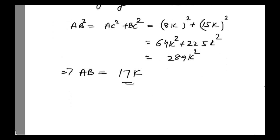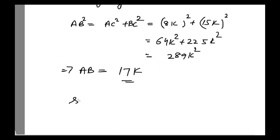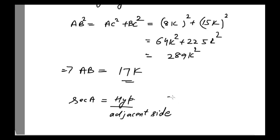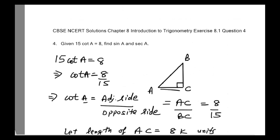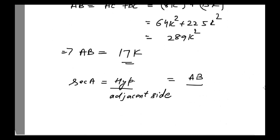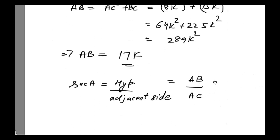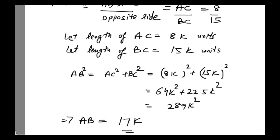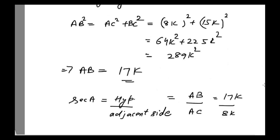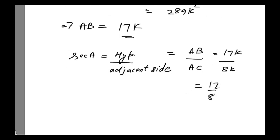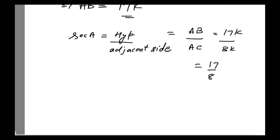Now we can find sine A and secant A. Secant A is equal to hypotenuse divided by adjacent side. The hypotenuse is AB and the adjacent side to angle A is AC. So AB divided by AC equals 17K divided by 8K, giving us secant A equal to 17 divided by 8.